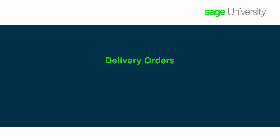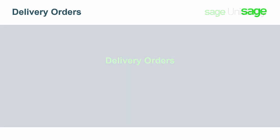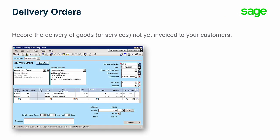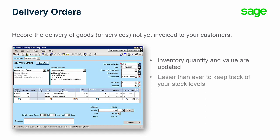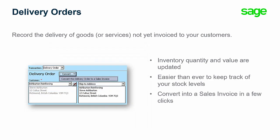Delivery orders are the equivalent of goods received notes in the Accounts Receivable module. Delivery orders allow you to record the delivery of goods or services which have not yet been invoiced to your customers. When a delivery order is recorded, your inventory quantity and value are updated, making it easier than ever to keep track of your stock levels. When you are ready to invoice your customers, a sales invoice can be created in a few clicks from the delivery order.